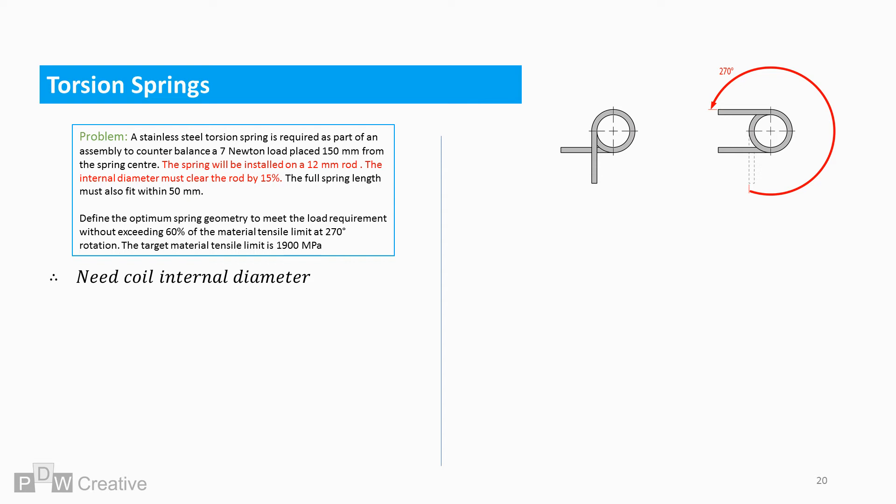We need to work out our internal diameter. Internal coil diameter equals rod diameter times 115%. The rod is 12 mm, so 12 times 1.15 gives us 13.8 mm. We can rely on this figure as a constant. The internal diameter is not going to change from this point forwards.